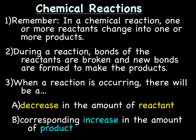Quick review of chemical reactions. Remember, in a chemical reaction, one or more of the reactants changes into one or more products. What's happening during chemical reactions with the reactants is that bonds are being broken, and then the atoms are rearranged to form new compounds known as products.